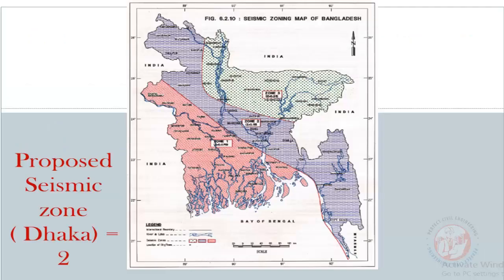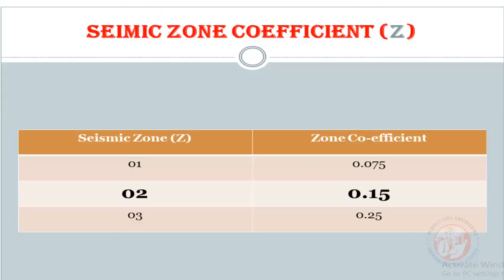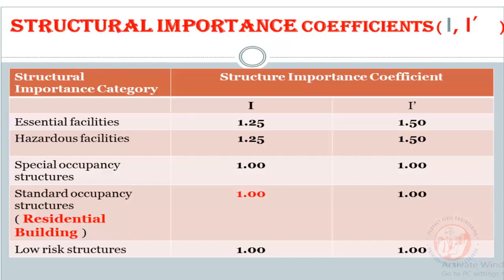At first, I am finding out the seismic zone. That is Dhaka, so this is seismic zone area equal to 2 and seismic zone coefficient Z equals 0.15.